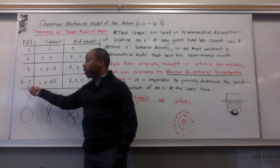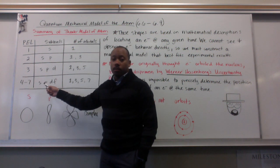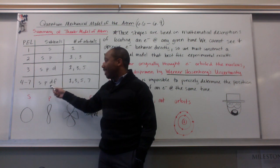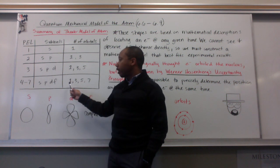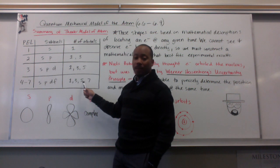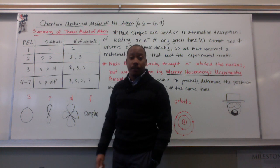In energy levels four through seven, we have S, P, D, and F, four sub-levels. Again, S has one, P has three, D has five, and F has seven orbitals.